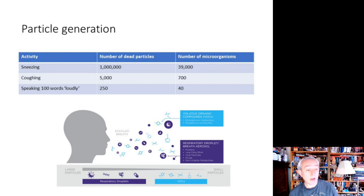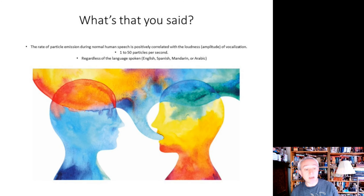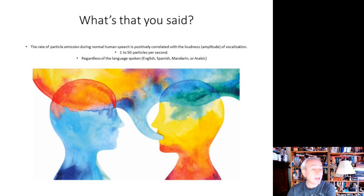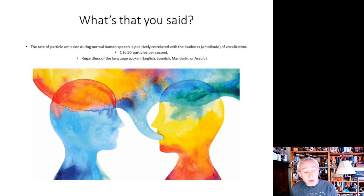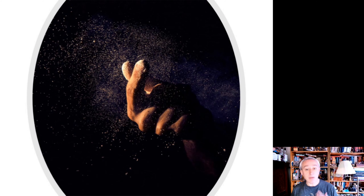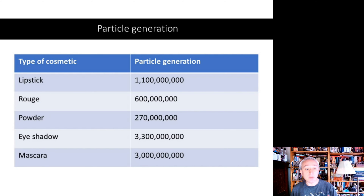Coughing produces about 5,000 particles, around 700 of which are microorganisms. Talking can also be quite influential. There's a fascinating study about talking and the number of particles produced, which correlates with voice levels — ranging between 1 and 50 particles per second depending on how loudly we are speaking. The study looked at people talking in different languages and found it didn't actually make any difference. Interestingly, the way we express ourselves actually correlates to the number of particles we're producing.